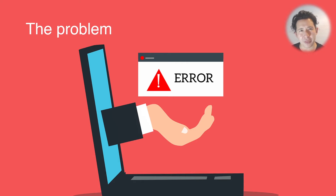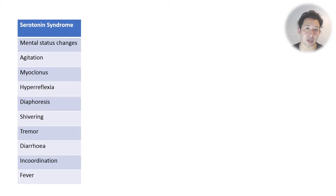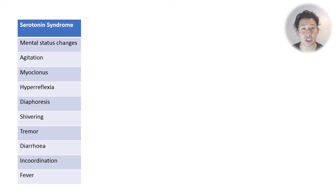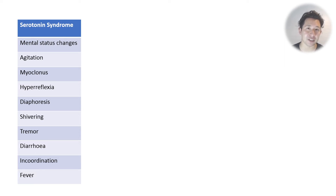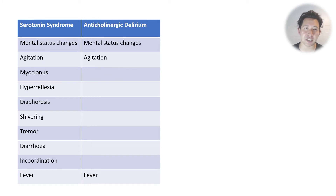The problem with Sternbach's approach is this: there are 10 different diagnostic criteria and you can have any three of them, but they're all quite common and some are a bit vague. You can actually get three out of these from multiple different presentations that have nothing to do with serotonin toxicity. I'll go through a few possible differentials and how they could be diagnosed as serotonin syndrome under Sternbach's criteria.